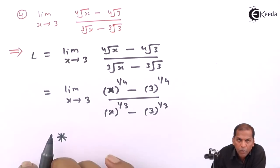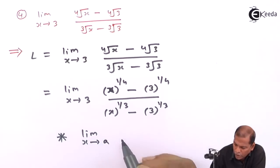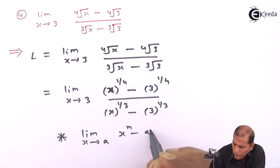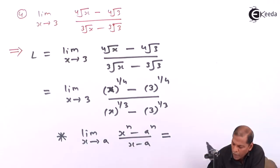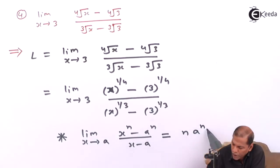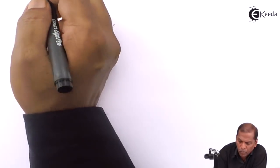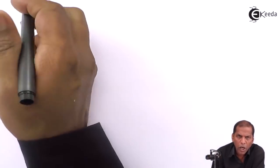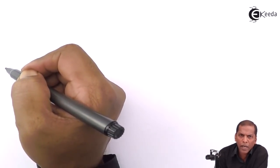In this case we have to use the formula: limit x tends to a of x raised n minus a raised n, upon x minus a, equals n times a raised n minus 1. To apply this formula, we have to divide the numerator and denominator by the term x minus 3.